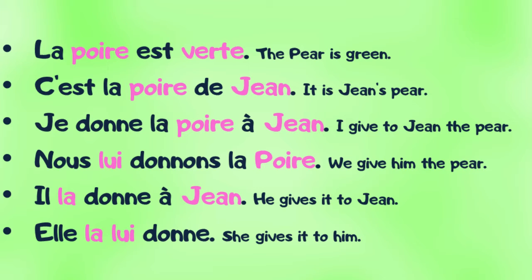La poire est verte. You have the English translation: The pear is green. C'est la poire de Jean. Je donne la poire à Jean. Nous lui donnons la poire. Il la donne à Jean. Elle la lui donne.